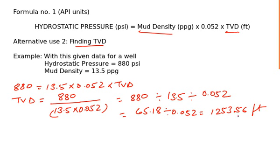For depth calculation you can ignore the decimal values because for such large quantities a 0.56 feet of depth will not matter. So without an error you can write it 1253 feet. This was the second alternative use of formula number one and in later videos we will see how to use the other formulas from formula sheet in API units. See you in later videos.